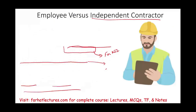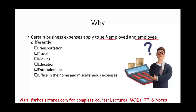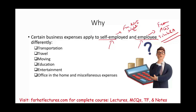The reason we're learning all of this is to differentiate between an employee and an independent contractor, because certain expenses are treated differently. For a self-employed individual, those deductions are for AGI and go on Schedule C. For an employee, they are deducted from AGI on Schedule A as itemized deductions. Remember, between 2018 and 2025, if you're an employee incurring those deductions, you cannot take them.